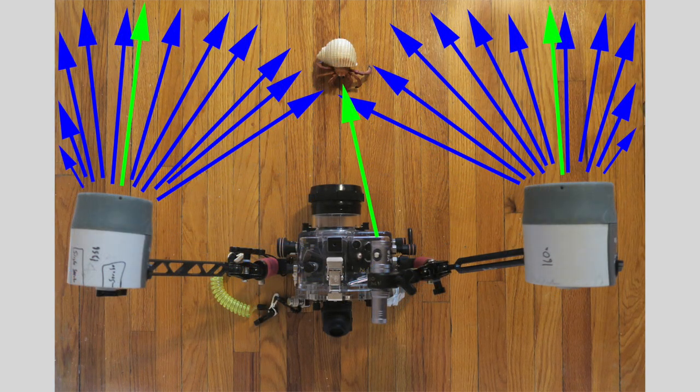Whereas if I have a separate focus light, which you see here in green pointing at the subject, now I can point my strobes out such that the edge of the cone of light illuminates or catches my subject, but I don't illuminate the intervening water column.